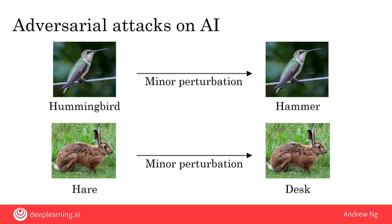Today, AI is being used to filter out spam and hate speech, and attacks like these will diminish the effectiveness of such filters. The attacks described so far require the ability to modify an image directly — for example, a spammer might directly modify an image before uploading it to a website or sending it in an email.